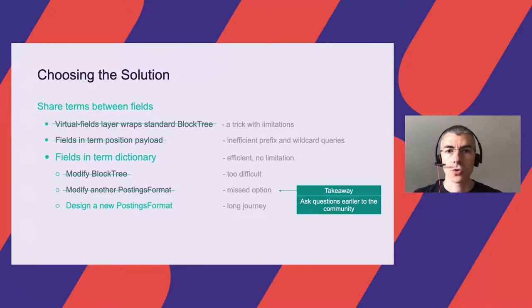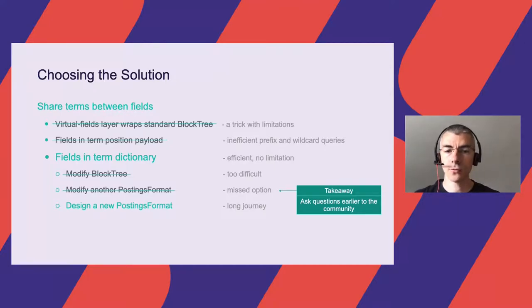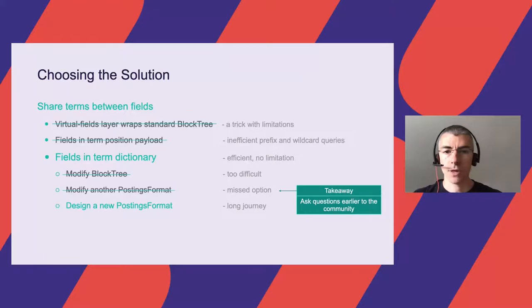We have the solution: swap the fields and terms layers to share terms between fields. But there are various ways to implement that, so we explored them. We initially implemented a virtual fields layer wrapping the Lucene standard block tree — it works, but it's a trick with limitations. We skipped other options and even missed one. Eventually, we decided to design a new posting format, not only specific to our use case, but one that could be shared with the community.